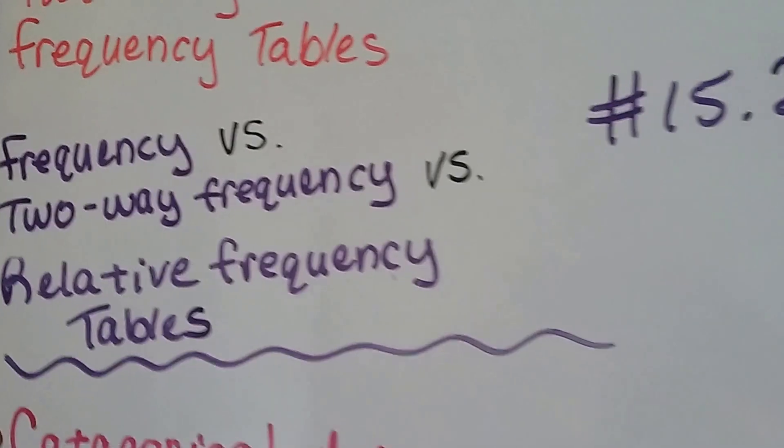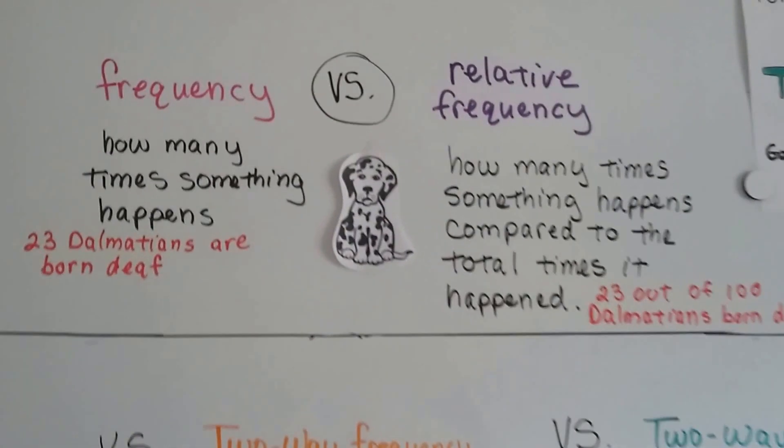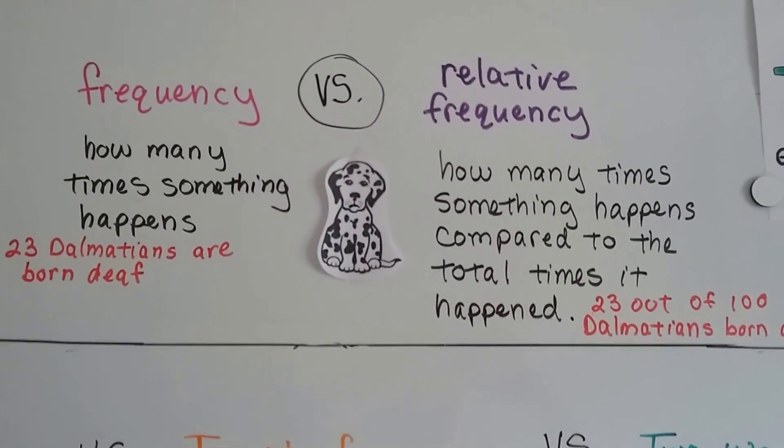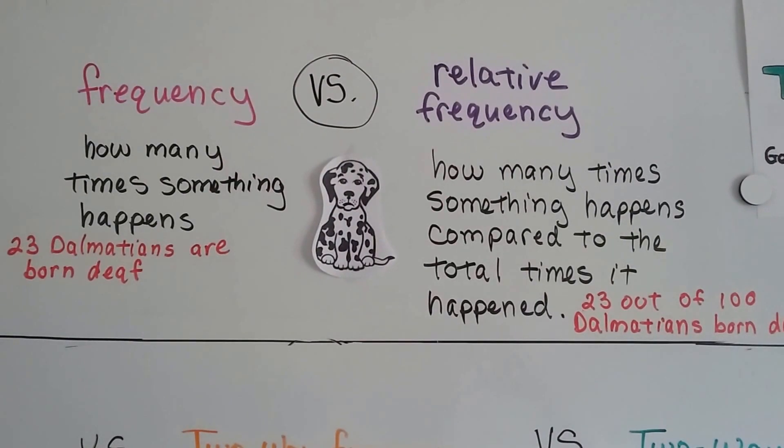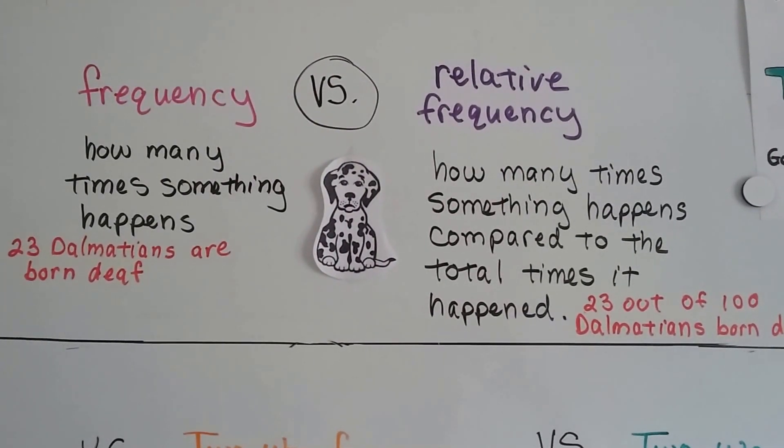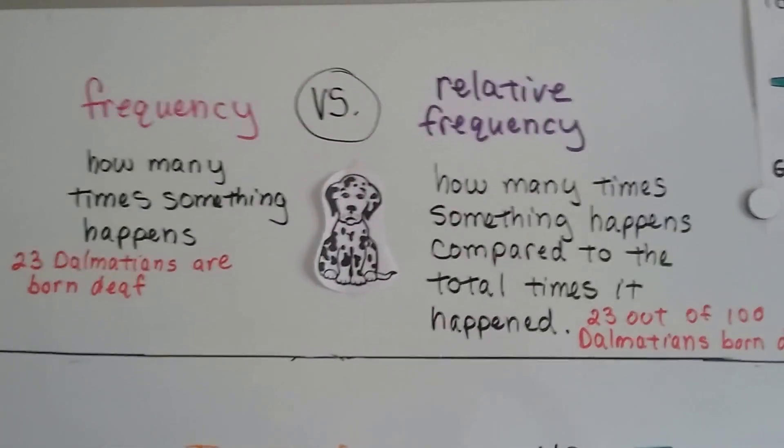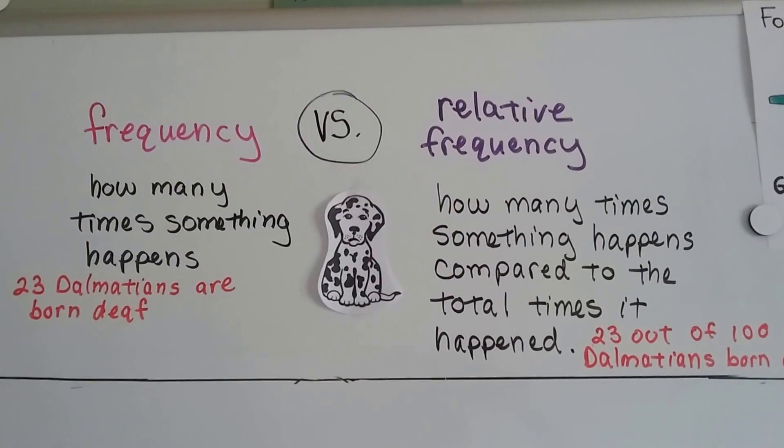We use a lot of the same words, don't we? That can make it confusing. So what we talked about in 15.1 videos was frequency and relative frequency. Frequency is how many times something happens. And we did a problem, a table, where we showed 23 Dalmatians are born deaf.